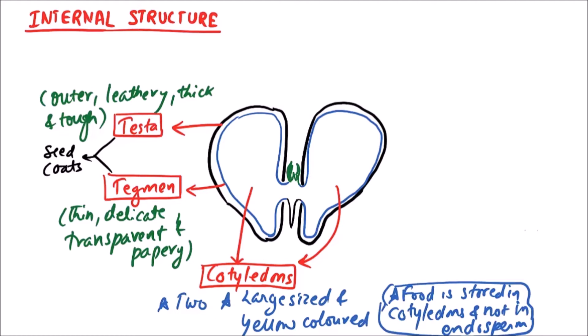Another important structure is embryonic axis, which is represented by plumule. This gives rise to future shoot, and the cotyledonary node.